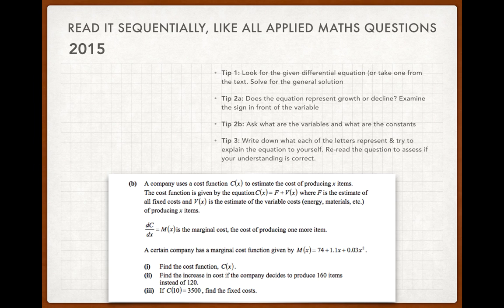Part two, find the increase in cost if the company decides to produce 160 instead of 120 items. You have your cost as a function of x. Get the cost to produce x equals 160. Cost to produce 120 subtract the 2. And the fixed costs cancel. So the constant of proportionality or the constant of integration cancels. And then we're looking for if c, the cost to produce 10 items is that, find the fixed costs. So sub x, 10 in for x, and then leave your answer equal to 3500. You should be able to get the constant of integration.